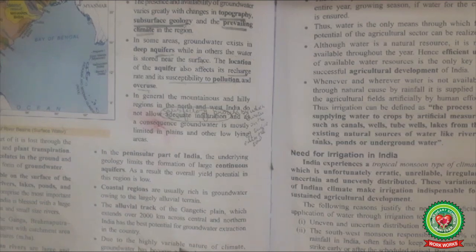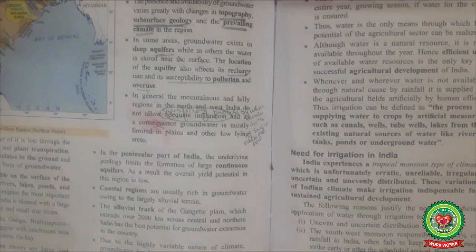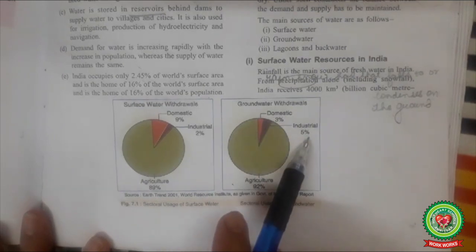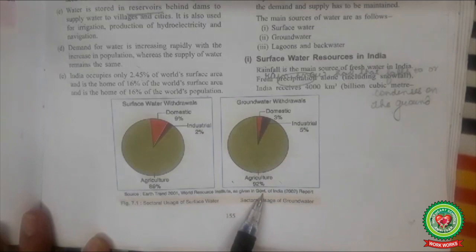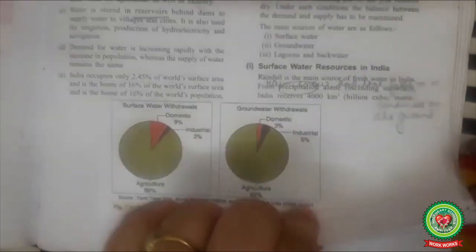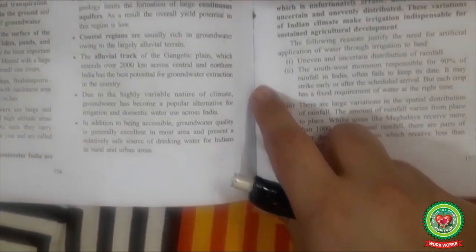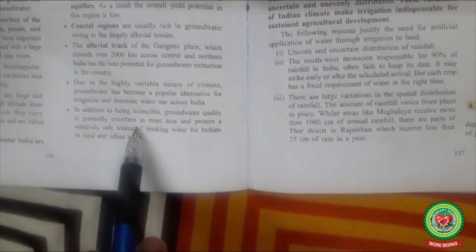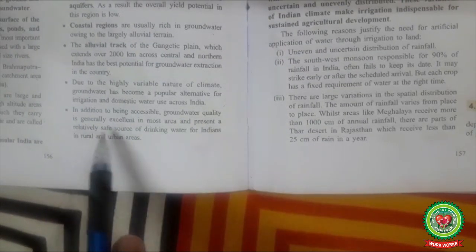Due to the highly variable nature of the climate, groundwater has become a popular alternative for irrigation and domestic water use across the country. Of groundwater, 3% is used for domestic purposes, 5% for industries, and 92% for agriculture. The groundwater quality is generally excellent in most areas and is a relatively safe source of drinking water for Indians in both rural and urban areas.